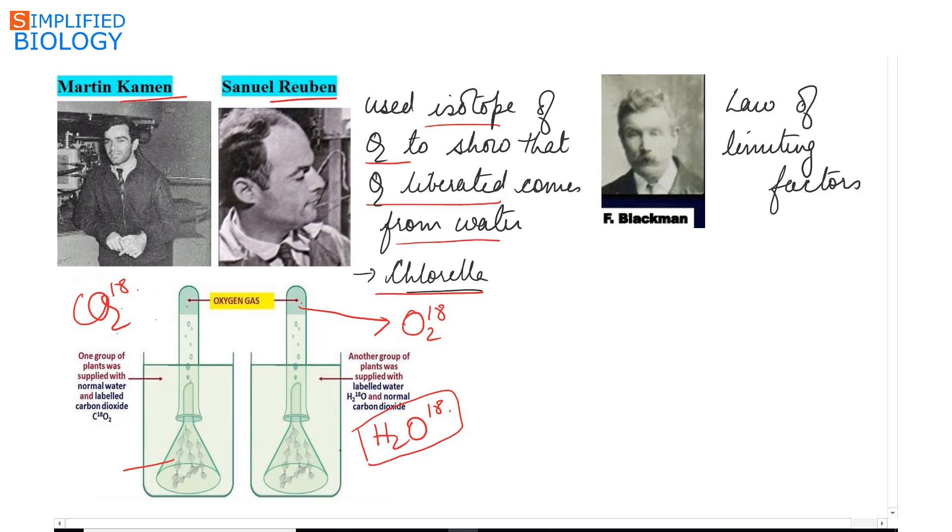Next, Blackman gave the law of limiting factors which states that a reaction that is affected by two or more factors is as fast as the slowest factor permits, or the factor that is present to its minimum decides the rate of any reaction.